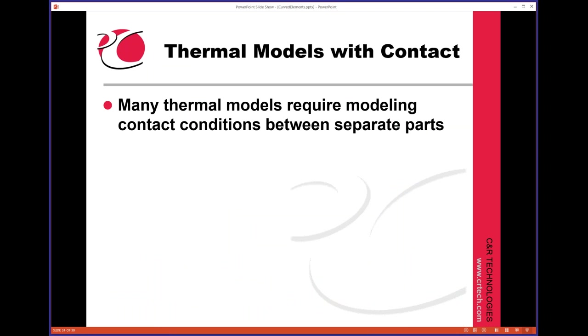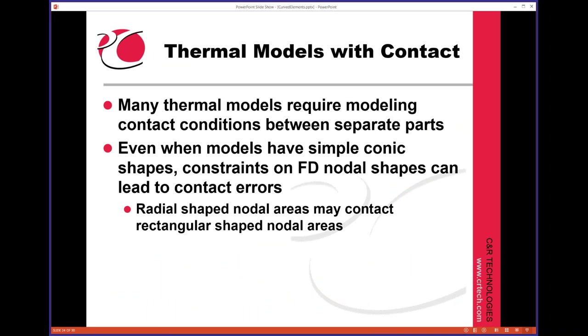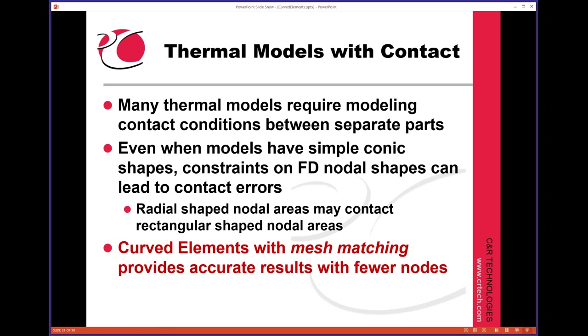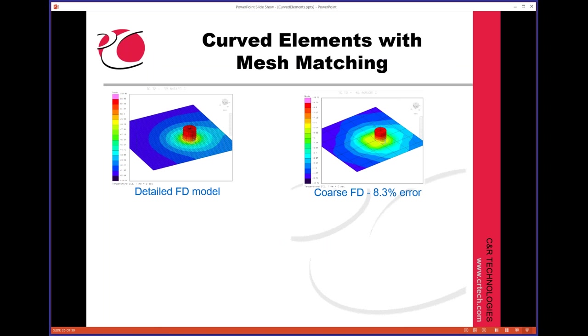All right, let's talk about contact. Even if you have models with simple finite difference shapes, rectangles and even rectangles on rectangles, you can run into problems when the nodal areas don't match up. In TD Direct, we have a mesh matching feature that produces identical meshes on either side of the contact. That helps avoid what we call a short circuit problem here. On the left is a detailed finite difference model, and we put five watts into this cylinder, and we're looking for the peak temperature. We see it's about 53 degrees on the left here, and then on the right is a coarse model. Same boundary conditions, same heat load, and we get about 48 and a half degrees. So it's about 8% off.